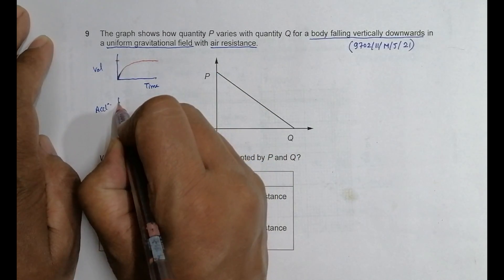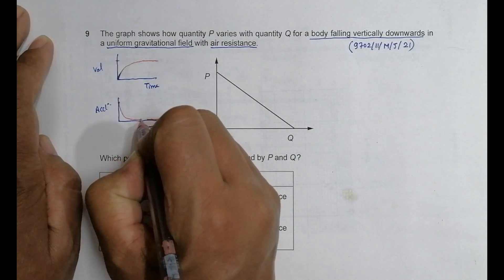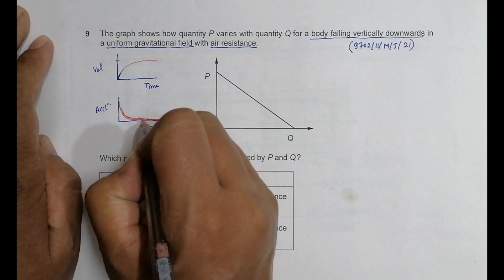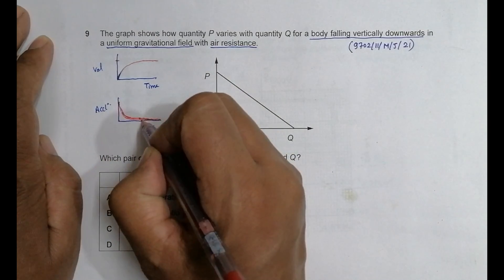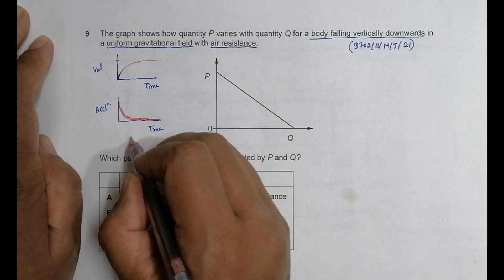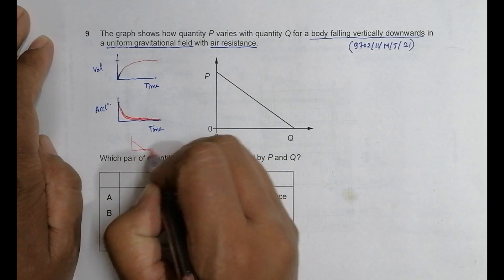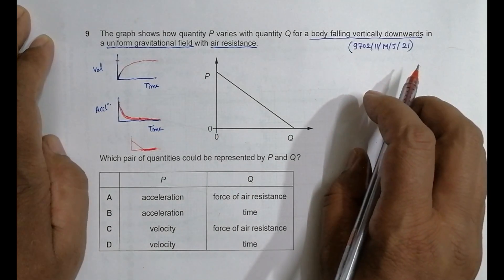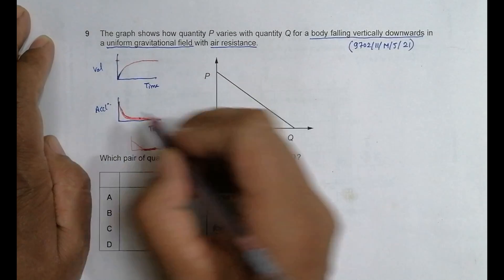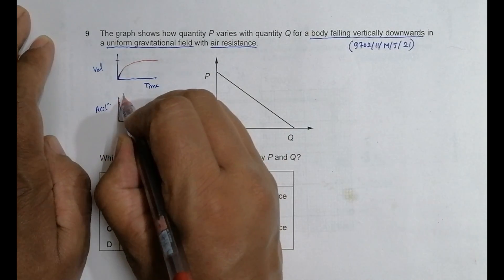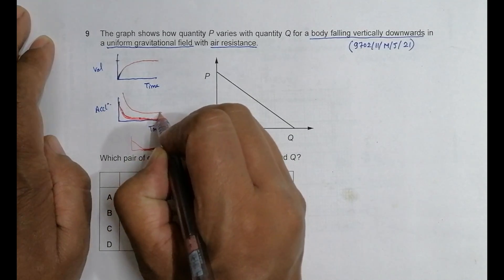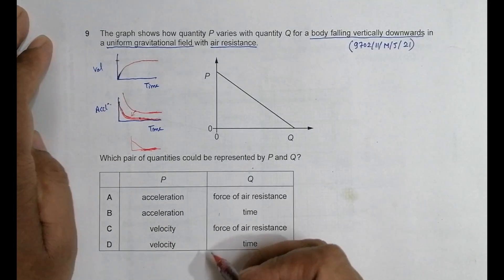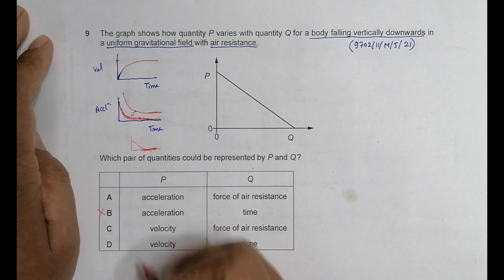Some people ask why the a-t graph is not a straight line. If it were straight, there would be a certain constant change of acceleration, which doesn't happen — the change must be smooth. So the acceleration curve decreases smoothly and eventually becomes constant near zero. This means choices B and D are incorrect.